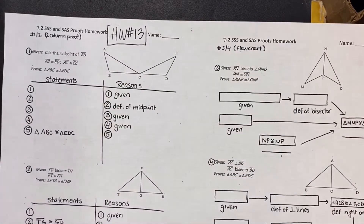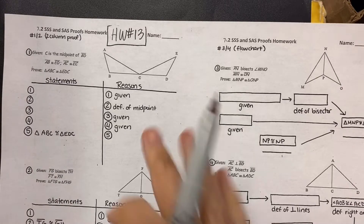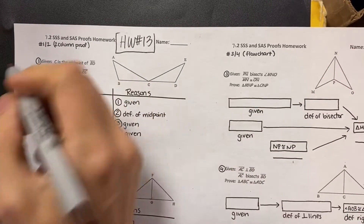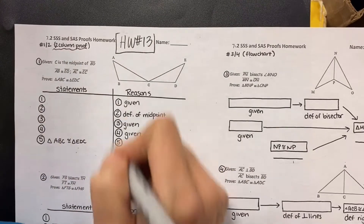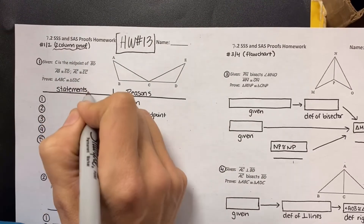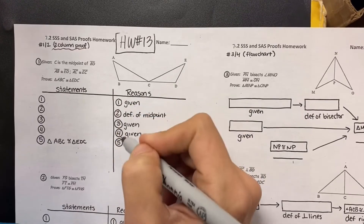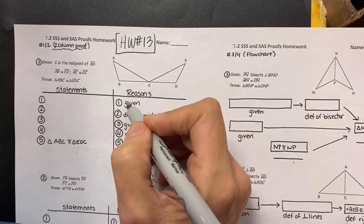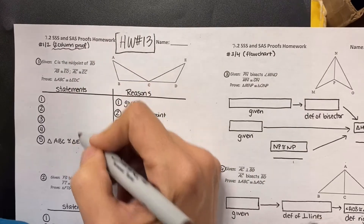Hi, we're going to do homework mark 13. These are proofs and we've worked on these a little bit before, but I think this is good to do on a video. This is what's called a two-column proof because it has a column that's statements and another column that's reasons. Really, this is just writing out our logical steps — that's what a proof is.